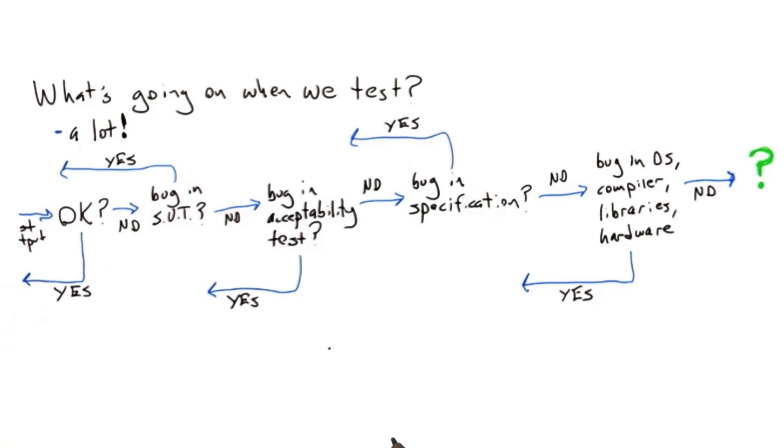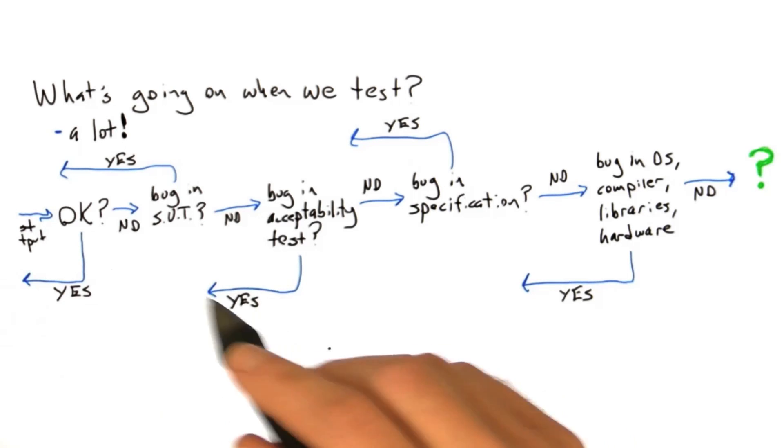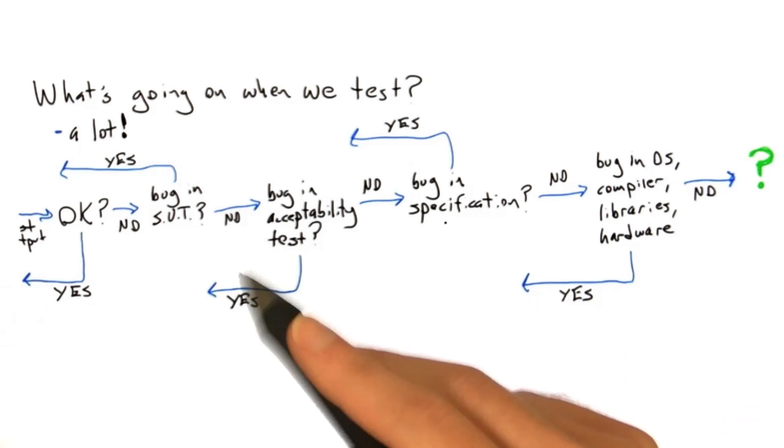So why don't we take a look at some more famous bugs that kind of fit this basic flow chart.